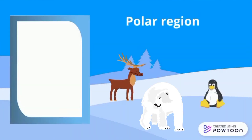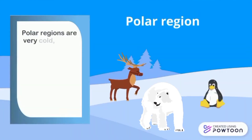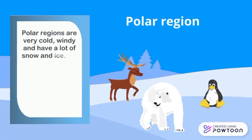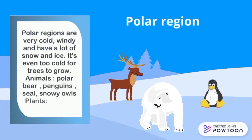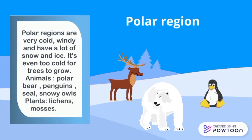Polar regions are very cold, windy, and have a lot of snow and ice. It's even too cold for trees to grow. Animals: polar bear, penguins, seal, snowy owls. Plants: lichens, mosses.